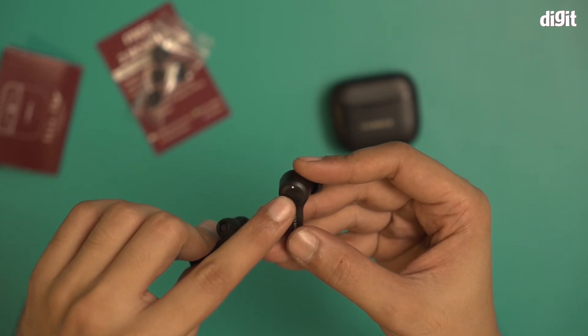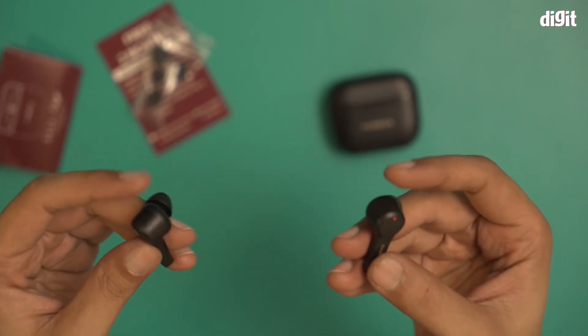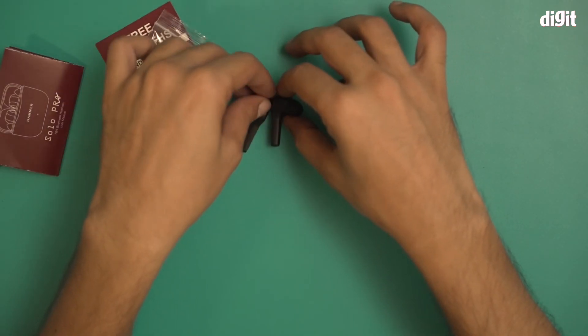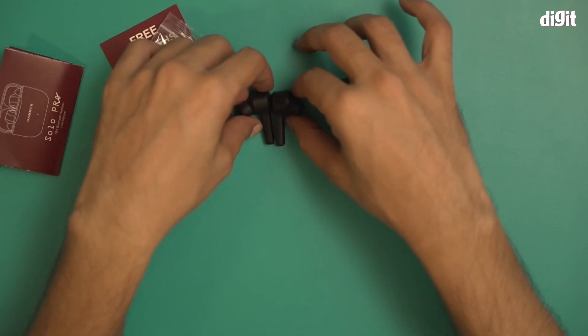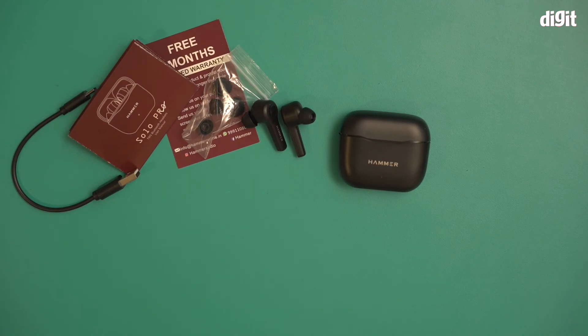Notice this LED light blinking over here. This basically means that we are now into pairing mode. In another video I'll show you how to pair this particular earphones to a smartphone. This is what you find inside the box containing the Hammer Solo Pro True Wireless Earbuds. Thank you for watching.